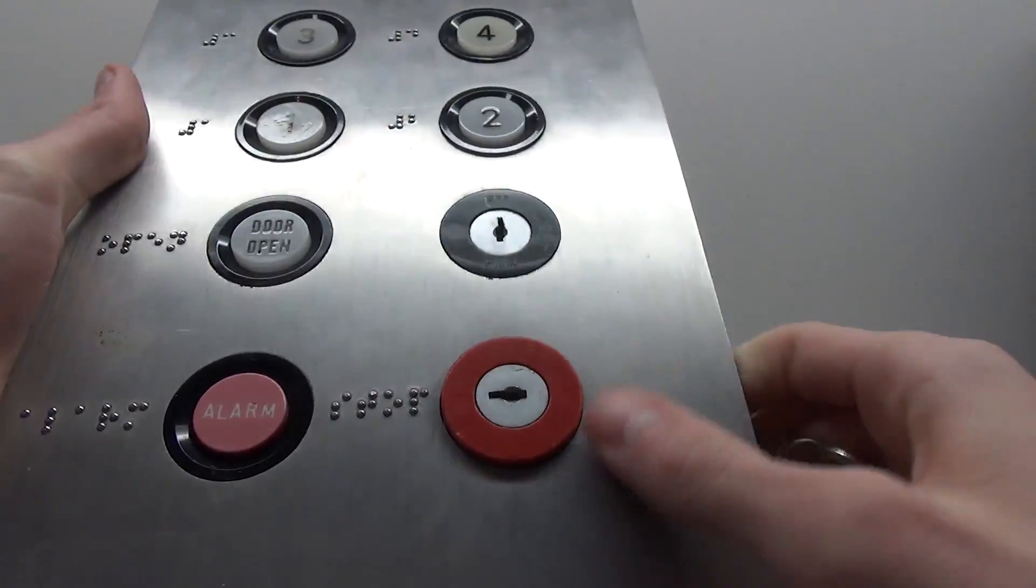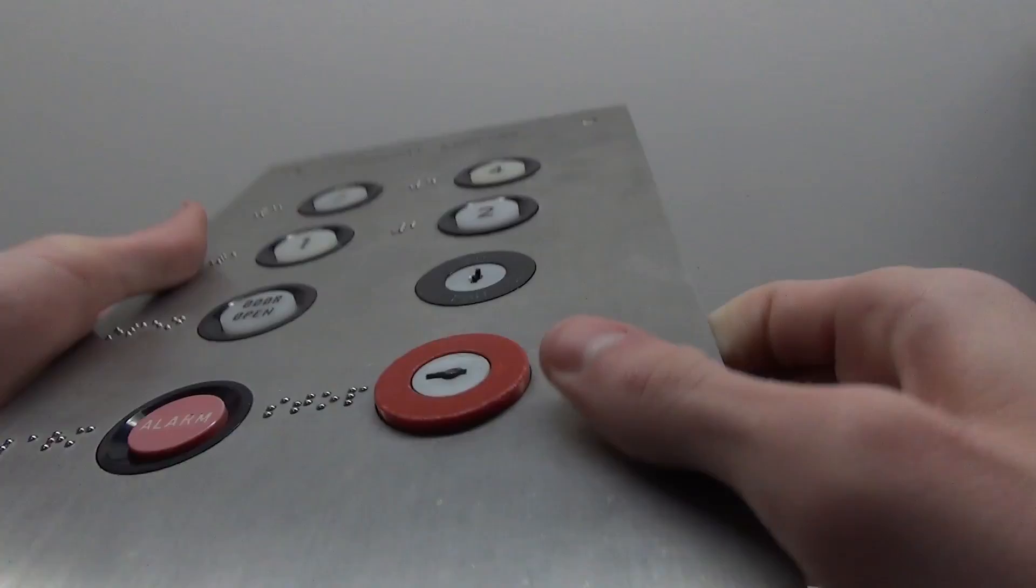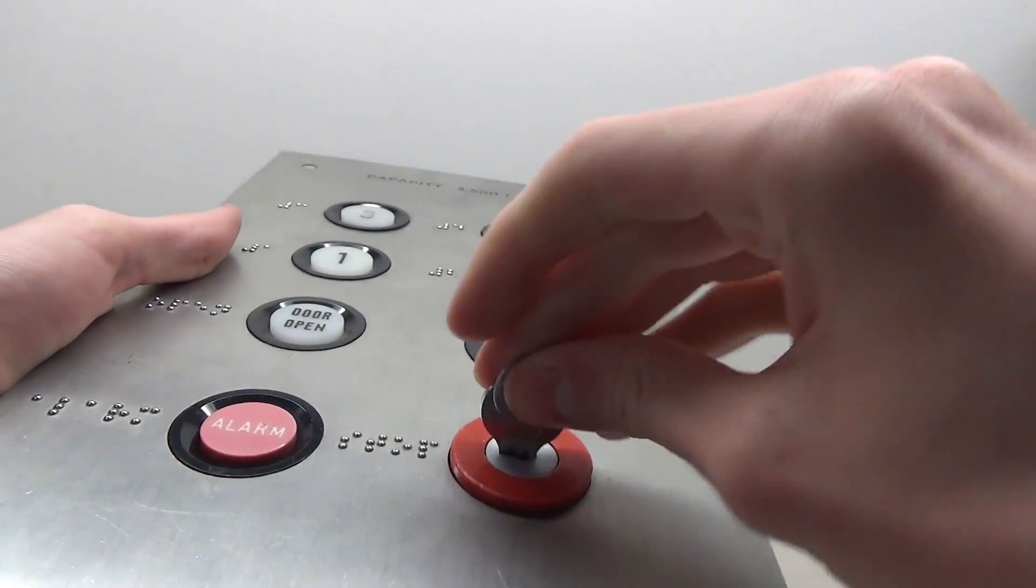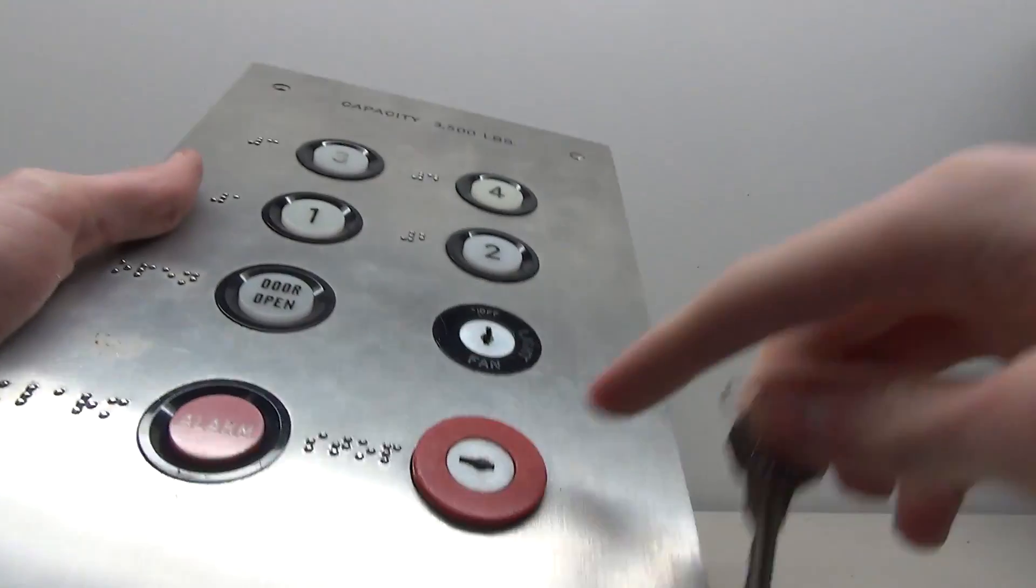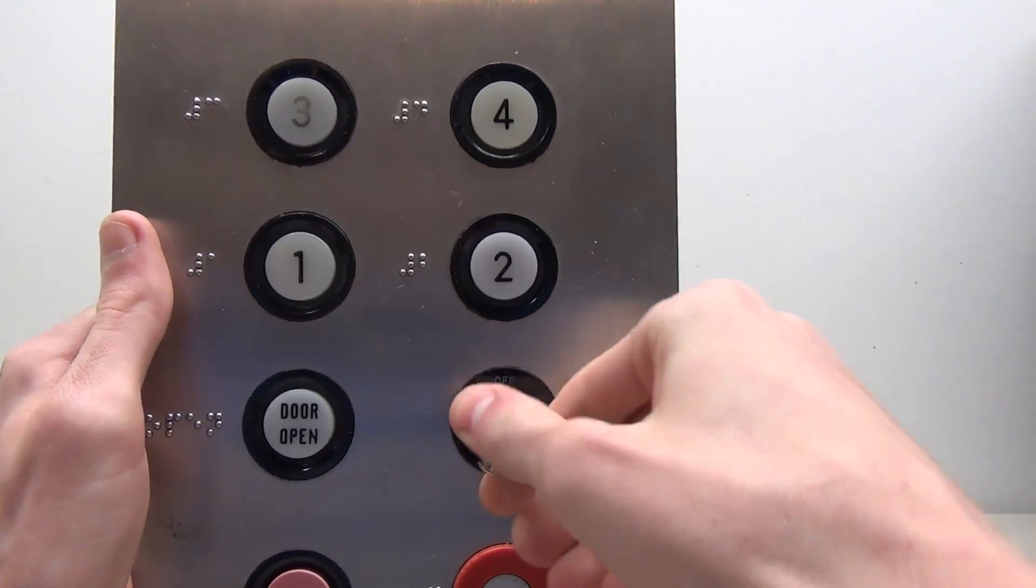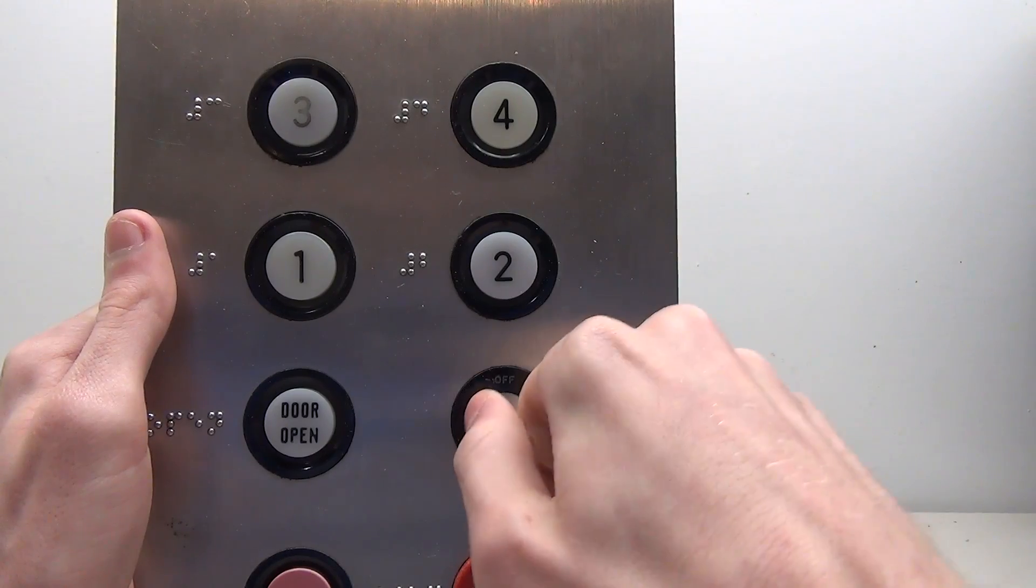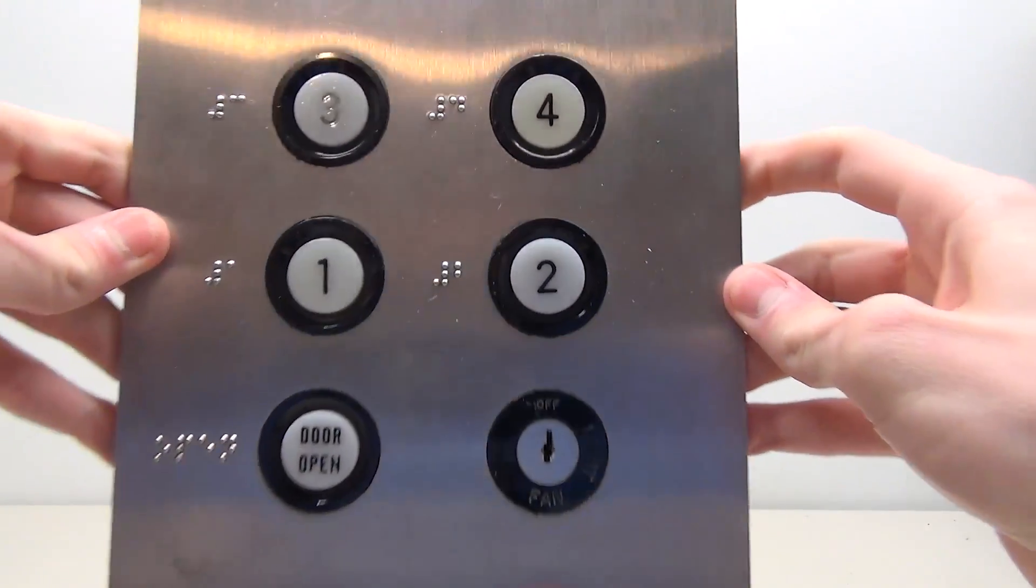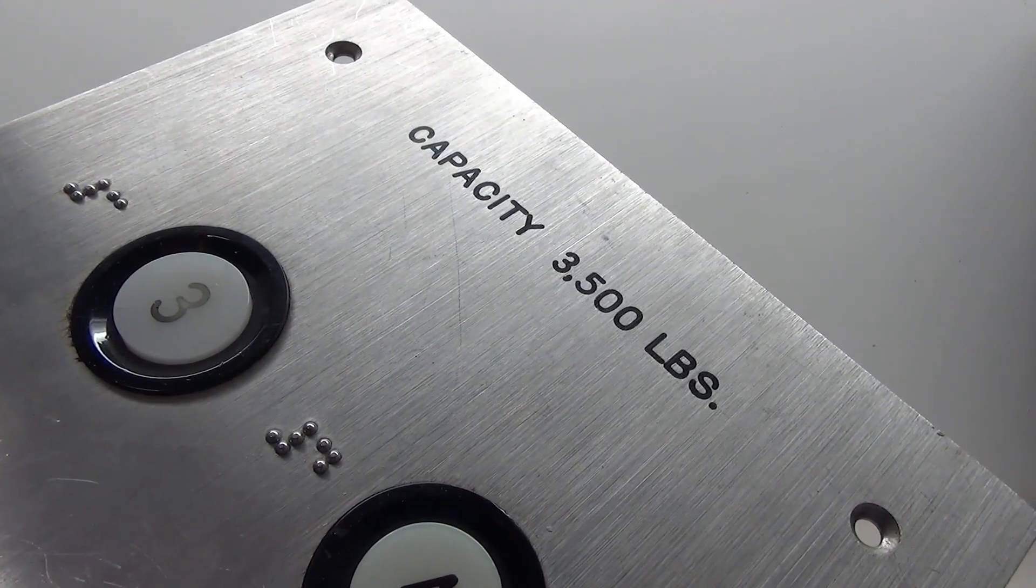Over here we have what appears to be a stop run key that sticks out too far, but the key that should work this does not. We've got our fan light key here which takes the standard key, our door open, and then obviously our four floor buttons. And then on the top here we have our capacity.